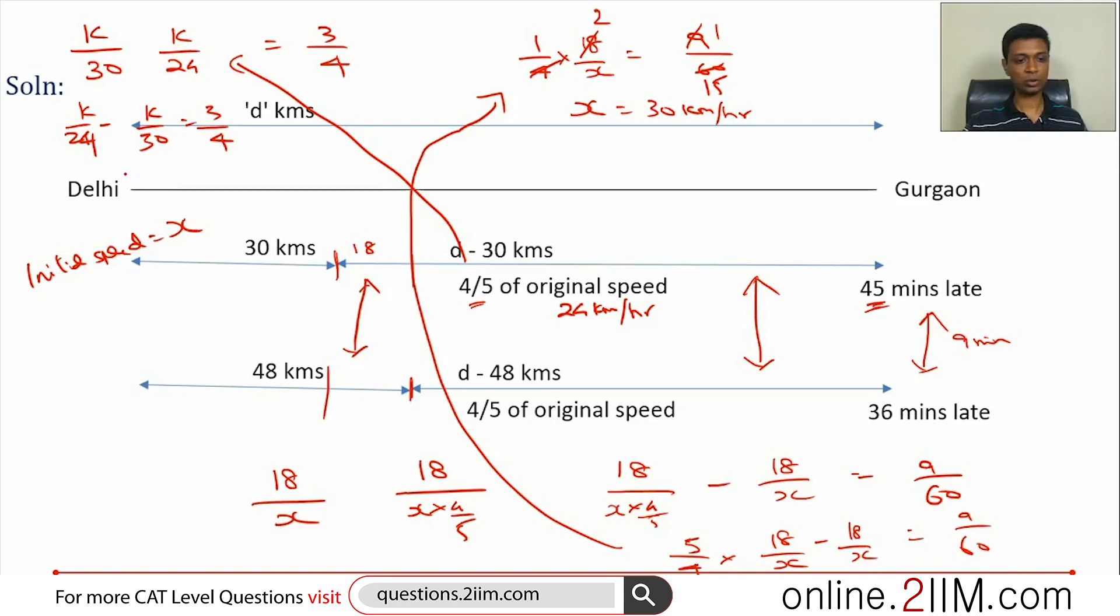The LCM between these two is 120. 5k minus 4k is k, which is 90 kilometers. The overall distance is 30 plus 90, total distance is 120 kilometers. Wonderful question.